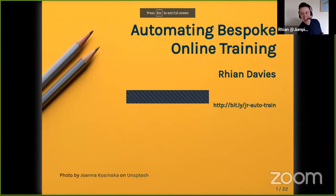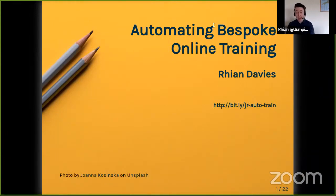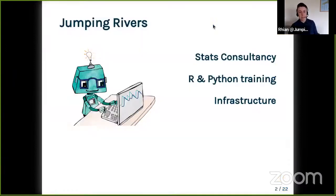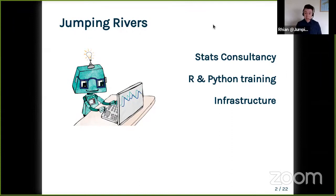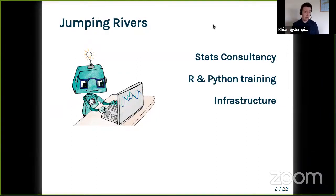My name is Rian. I'm a data scientist at Jumping Rivers, and I want to tell you about how we handle our infrastructure around delivering training. We're based in the United Kingdom — we do statistical consultancy, we build a lot of infrastructure, we're RStudio partners. A big part of what we do is provide training. We have about 30 different courses — intro to R, machine learning with Python, Docker, Git, etc. — delivering about 100 courses to around 2,000 attendees per year.